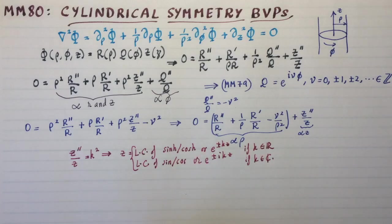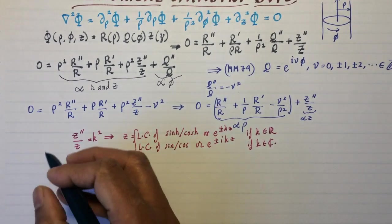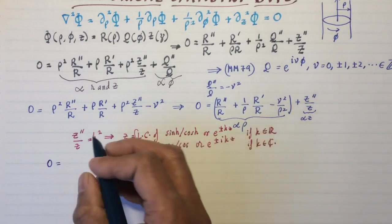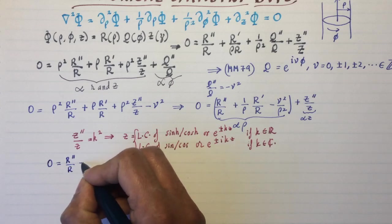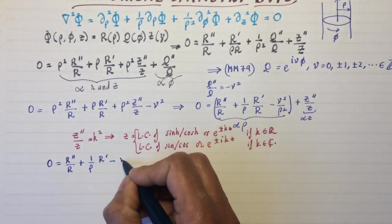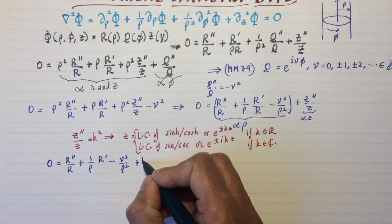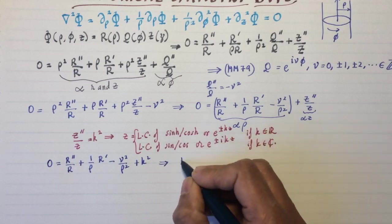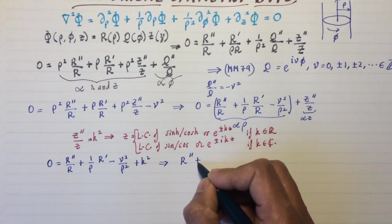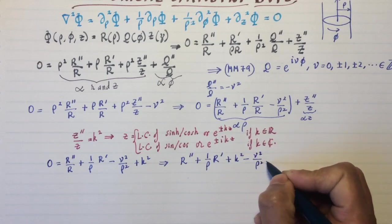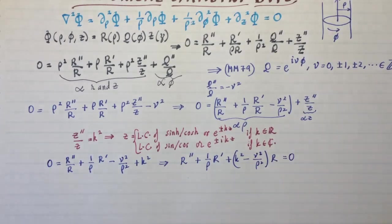Now once you have that, the fate of the rest of the problem is sealed. So let's write the rest of the problem. This tells me that the radial part alone, this part, R''/R + 1/(ρ) R' - ν²/ρ² + k² must be zero. Because Z''/Z is equal to k². Rewriting it, I get R'' + 1/ρ R' + (k² - ν²/ρ²)R. Doesn't quite look like Bessel's equation, but we're getting close.